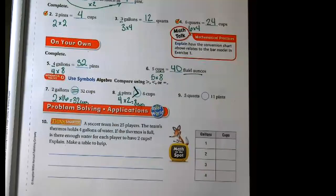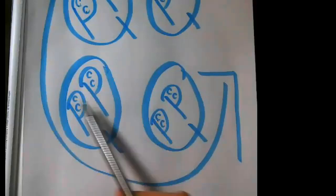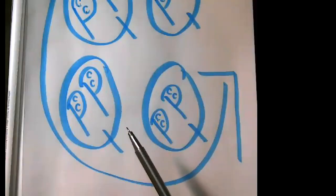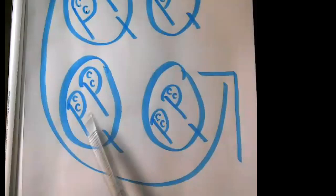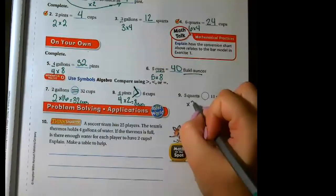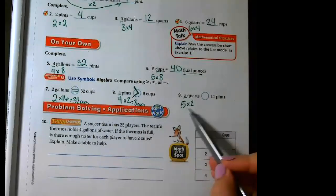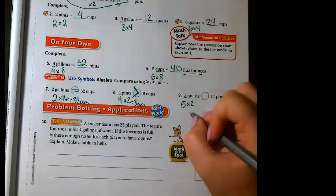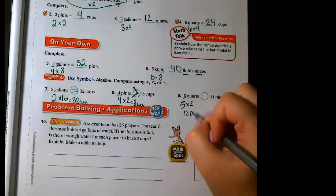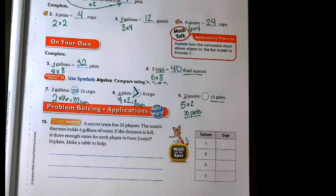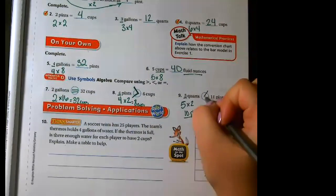For our next one, we're looking at quarts and pints. Inside one of my Q's, how many P's or pints do we see? Two — I have one and two. So for this problem I'm going to be multiplying by two. I take my number of quarts — five times two is 10 pints. So do I want 10 pints or 11 pints? Eleven pints. I want more.